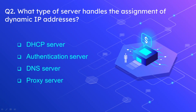Question number 2: which type of server handles the assignment of dynamic IP addresses? The options are DHCP server, authentication server, DNS server, and proxy server. The correct option is DHCP server. DHCP stands for Dynamic Host Configuration Protocol. The dynamic refers to the dynamic assignment of IP addresses used over the LAN, and the DHCP server assigns dynamic IP addresses from a specified range to clients inside the LAN or specific network.